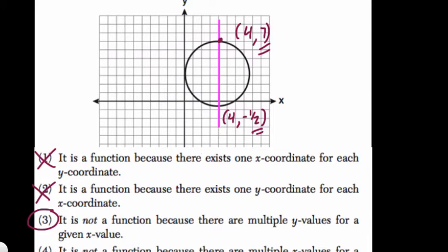The reverse could be true, and that would be okay, and, in fact, would not mean it's not a function. If there are multiple x-values for a given y-value, that's fine.